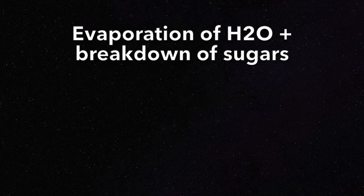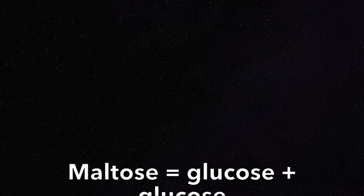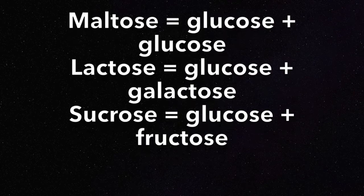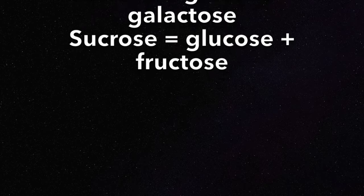The chemistry of the reaction involves the evaporation of water and the breakdown of sugars. The caramelization reaction depends on the type of sugar. For example, if the sugar is maltose, it will break down into two glucose molecules. If the sugar is lactose, it will break down into one glucose molecule and one galactose molecule. And if the sugar is sucrose, it will break down into one glucose molecule and one fructose molecule.